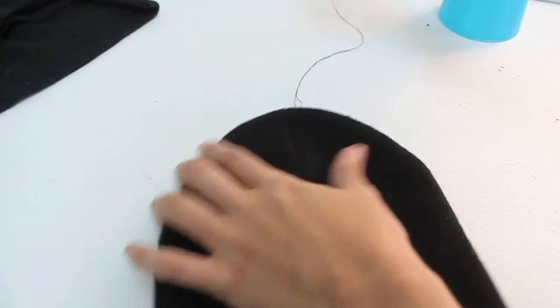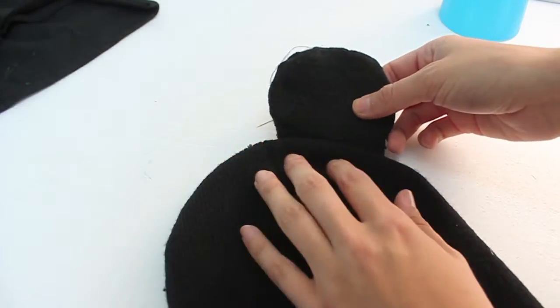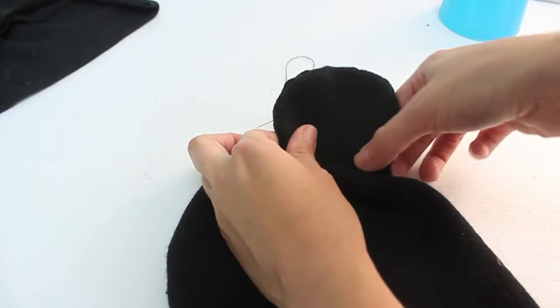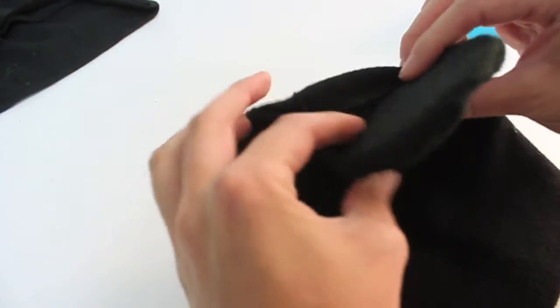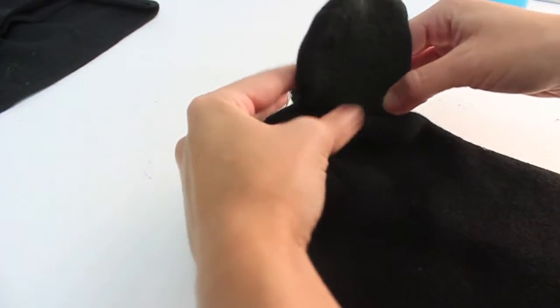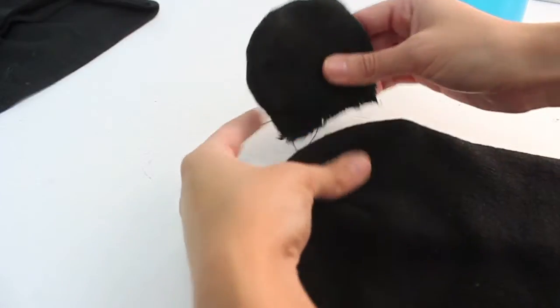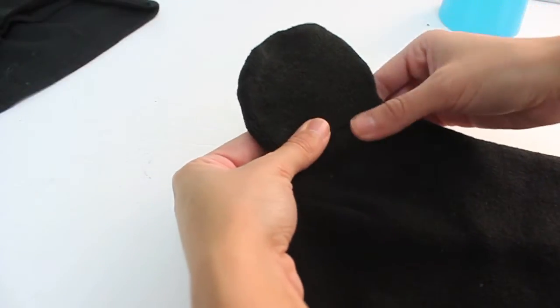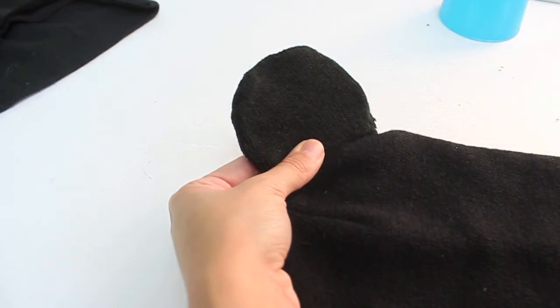Once both sides are completely sewn, I'm going to place them on the top of my beanie. I want to make sure that I secure them on correctly. Go ahead and find a spot that you like, and take one of your sewing pins and secure it on there. And also do that to the opposite end as well.